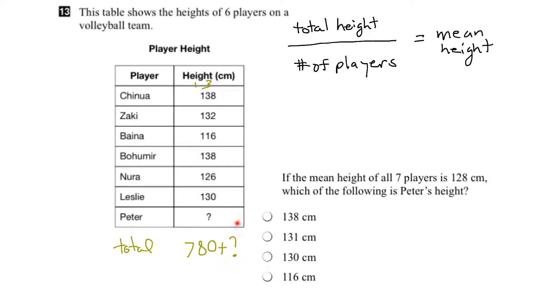So let's now take this and stick it into our equation. We'll get rid of the total height here and add in 780 plus a question mark. Now we have 1, 2, 3, 4, 5, 6, 7 players, so we can replace the total number of players with 7. And we know that the mean height is 128 centimeters, so we can replace this with 128.